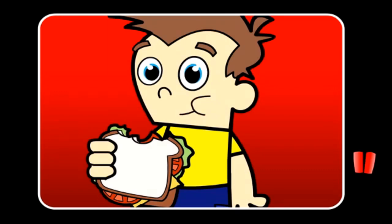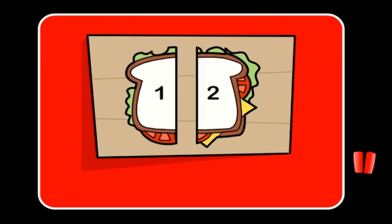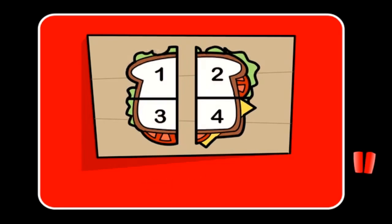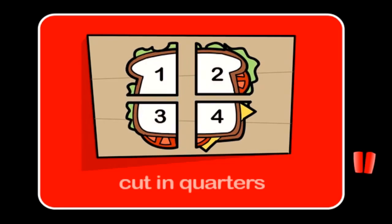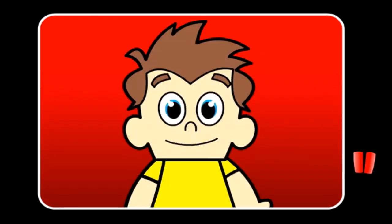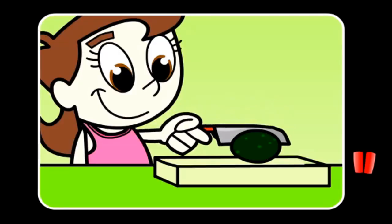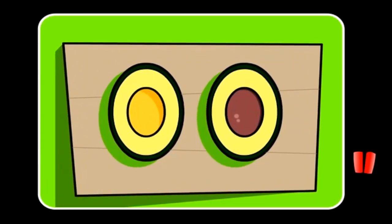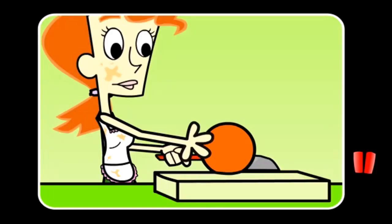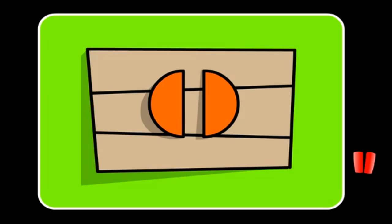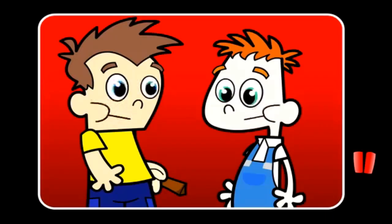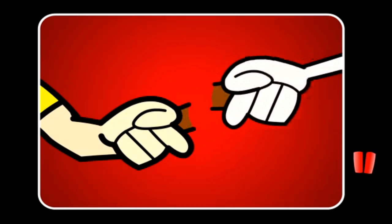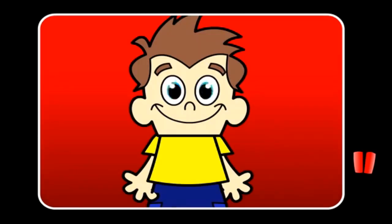When you have a sandwich, do you like to cut it into two pieces? If it is cut into two, we say it is cut in half. If it is cut into four, we say it's cut into quarters. We often cut things in half for different reasons. When Sally eats avocado she cuts it in half. To make orange juice, mum cuts the orange in half to squeeze it. If you are with a friend, it's good to go halves in special treats like a chocolate bar.